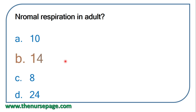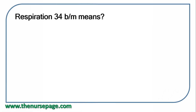Normal respiration rate in adults: from the options 10, 14, 8, 24, the correct answer is 14. Normal respiratory rate in adults ranges from 12 to 20 breaths per minute. A respiratory rate of 34 breaths per minute is called tachypnea.